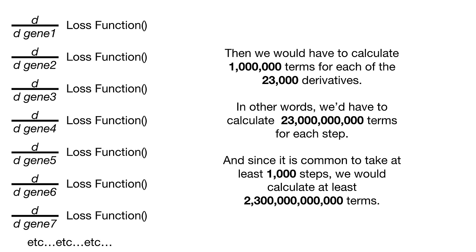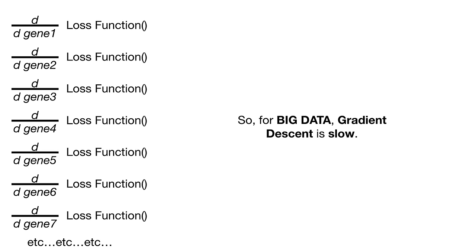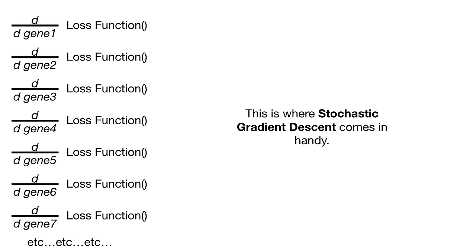In this super simple example, we were just fitting a line with two parameters, the intercept and the slope. And we only had three data points. So we only had three terms to compute each step for the intercept and we only had three terms to compute each step for the slope. So each step didn't require much math. But what if we had a more complicated model, like a logistic regression that used 23,000 genes to predict if someone will have a disease?